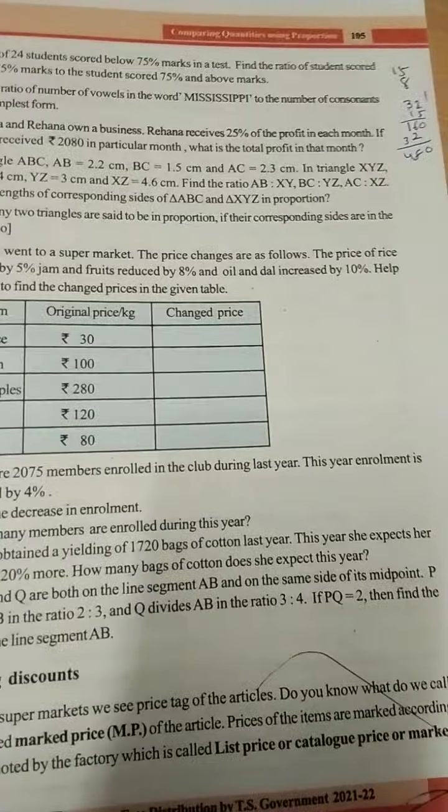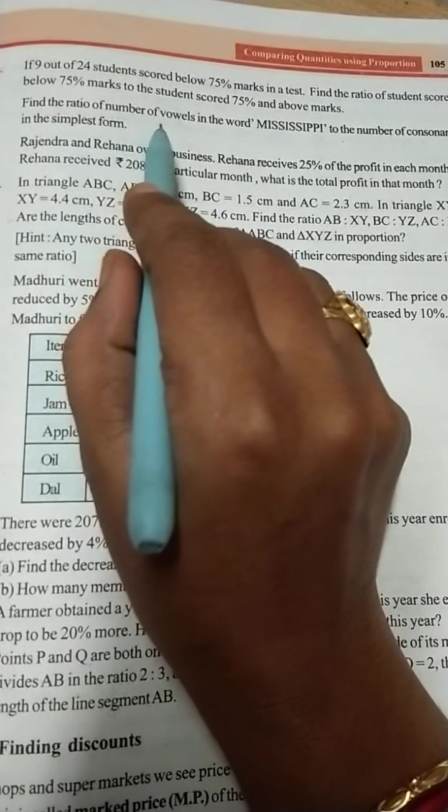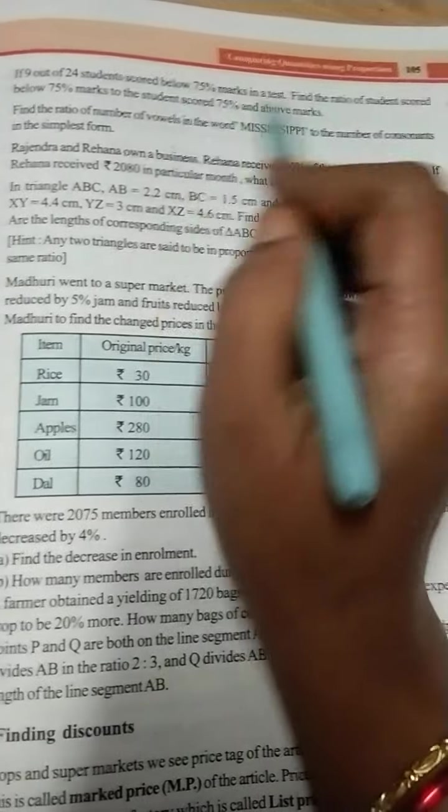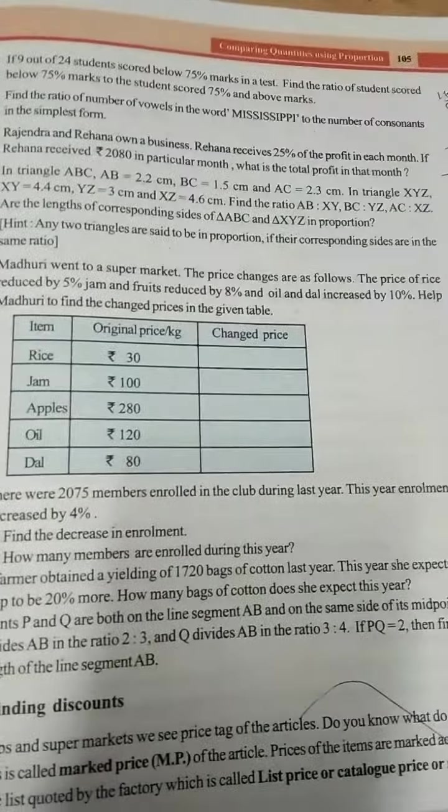Next, I am going to explain the 8th question. The 8th question is: find the ratio of number of vowels in the word Mississippi to the number of consonants in the simplest form. We need to write the ratio of the vowels and consonants in this given word Mississippi. Just we need to find out the number of vowels and consonants.